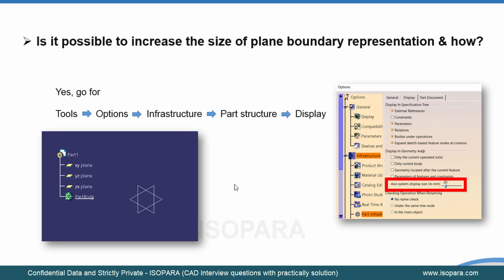The next question is: is it possible to increase the size of the plane boundary presentation, and how? When you open a new part in CATIA, you will find default planes — XY, YZ, and ZX — which are sometimes very small and not easily visible or selectable. You can go to Tools > Options > Infrastructure > Part Infrastructure > Display tab, and use the axis display size slider to increase it from 20 to 30, 40, or whatever you want. Click OK to apply.